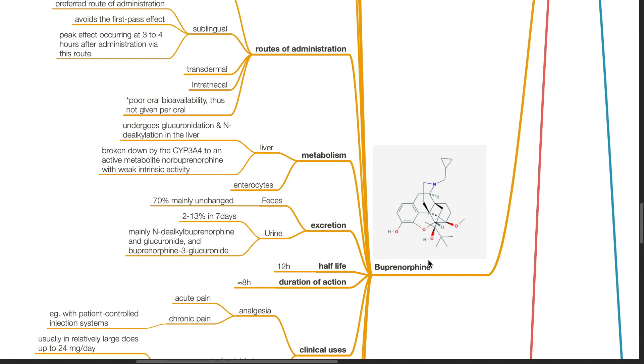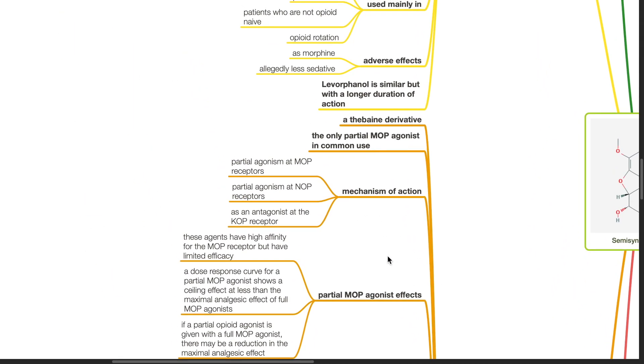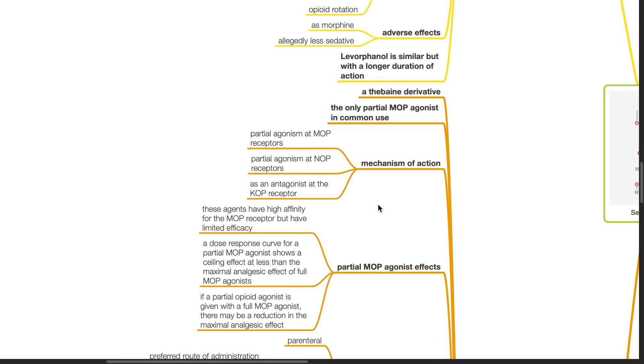Buprenorphine. This is a thebaine derivative. It is the only partial MOP agonist in common use. Mechanism of action: partial agonism at MOP receptors, partial agonism at NOP receptors, antagonist at the KOP receptor.